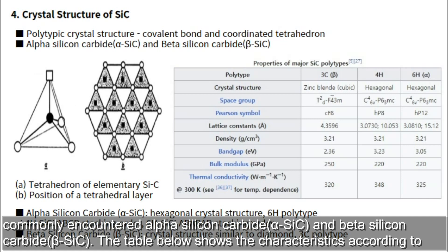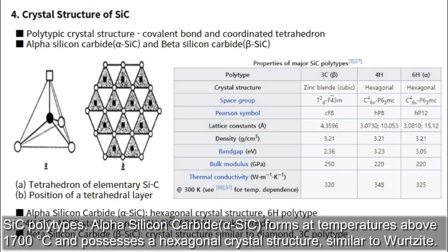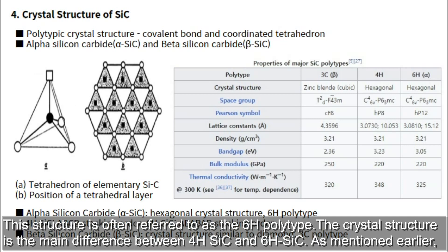The table below shows the characteristics according to SiC polytypes. Alpha Silicon Carbide forms at temperatures above 1,700 degrees Celsius and possesses a hexagonal crystal structure, similar to wurtzite. This structure is often referred to as the 6H polytype. The crystal structure is the main difference between 4H-SiC and 6H-SiC.